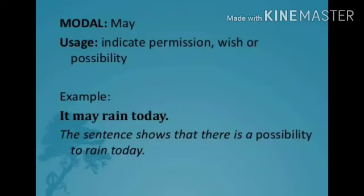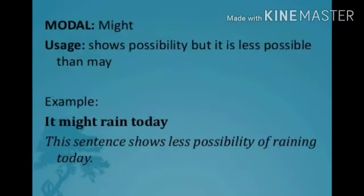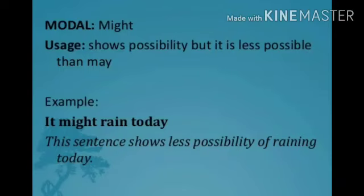For example, 'It may rain today' — here 'may' shows the possibility of rain. May is also used for asking permission, as in 'Ma'am, may I go out?' — the person is asking permission to go out. Next, 'might' is used to show possibility but with less certainty than 'may'. For example, 'It might rain today' shows possibility in a less probable way.